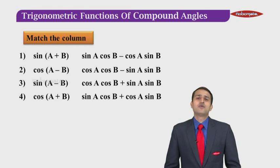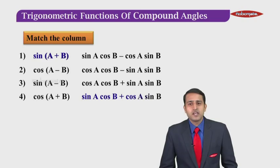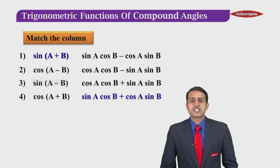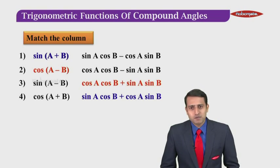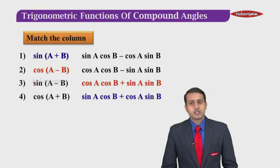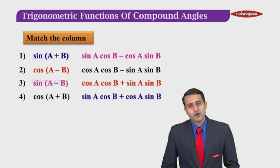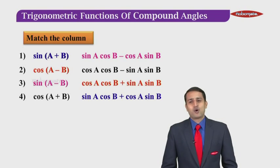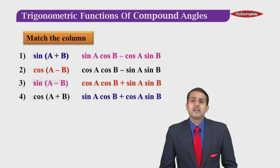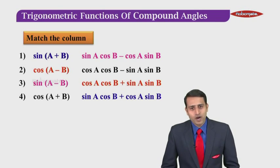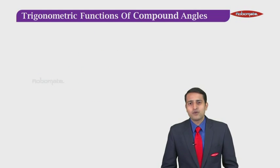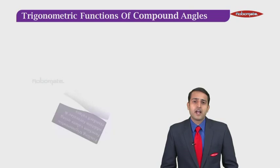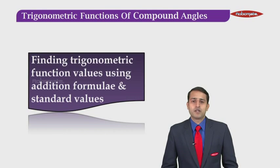Let us see the correct answers now. For the first one, sin(A+B), the correct answer is sin A cos B plus cos A sin B. For the second one, cos(A−B), it's cos A cos B plus sin A sin B. Third, sin(A−B), the correct answer is sin A cos B minus cos A sin B. And for cos(A+B), the correct answer is cos A cos B minus sin A sin B. Now let us proceed further into solving some sums based on these formulas.